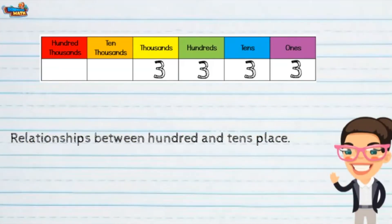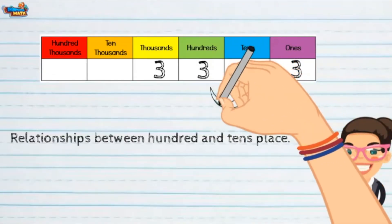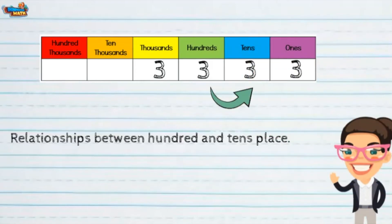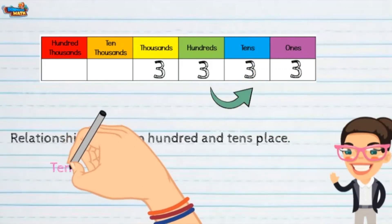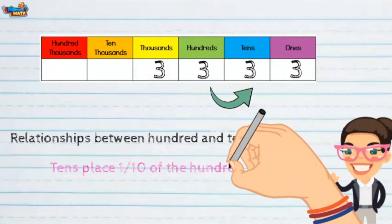To get from the tens place to the hundreds place, we move from right to left. The tens place is one tenth of the hundreds place.